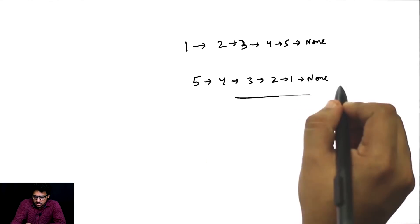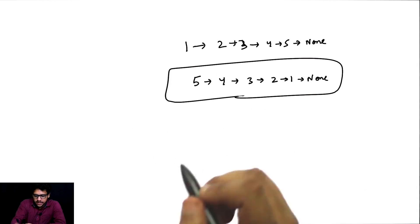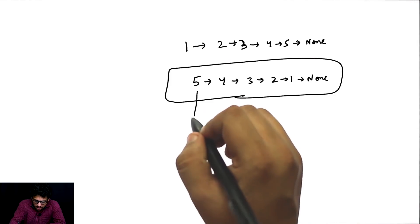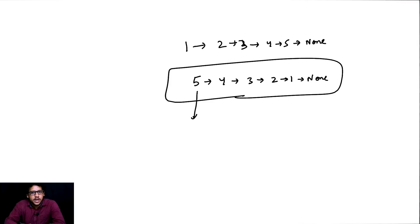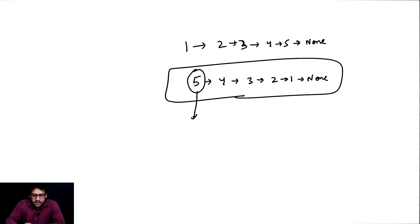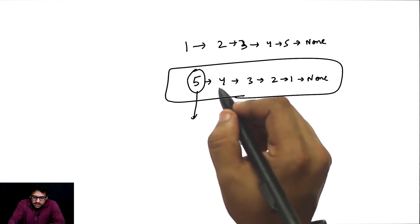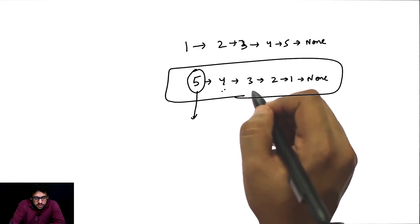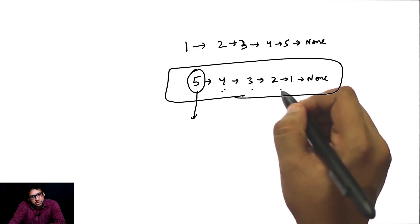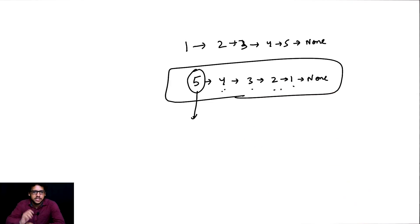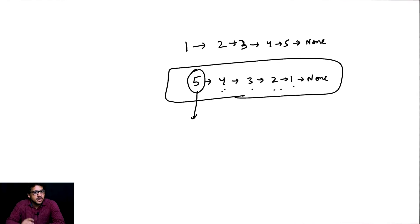This is the final output. The new head of the reversed linked list will be 5. 5's next should become 4, 4's next should become 3, 3's next should become 2, 2's next should become 1, and 1's next should become None. Now how can we do this? One simple approach will be a recursive approach.